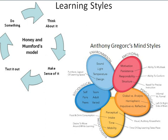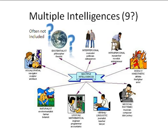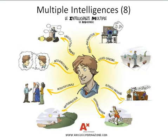We've got Honey and Mumford's model, their mind styles. We have my personal favorite, multiple intelligences. This one's showing nine of them. Howard Gardner did add additional intelligences over time, but he's been stuck at eight distinct intelligences for some years now.